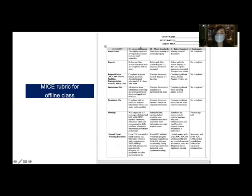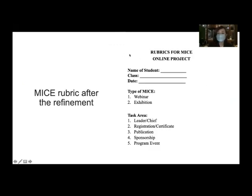Here is the MICE rubric for offline class. We took it from the ready rubric, then made some revision and used it for offline class. After that, we transformed the rubric into the online rubric for the MICE online project. Our research team discussed about it and finally came into two types of MICE: webinar and exhibition. There are five class areas: leader, registration and certificate, publication and sponsorship, and program event.